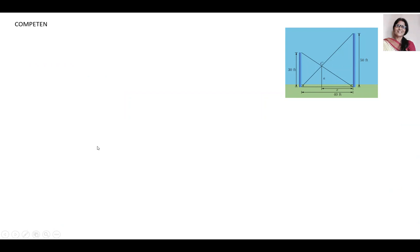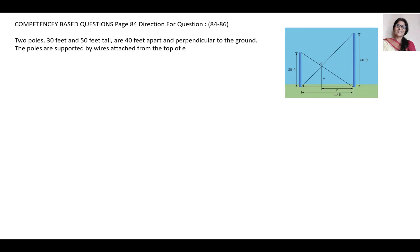Read the question mindfully because one question carries three marks and has three parts. Two poles, 30 feet and 50 feet tall, are 40 feet apart and perpendicular to the ground. The poles are supported by wires attached from the top of each pole to the bottom of the other, as in the figure. A coupling is placed at C where the two wires cross.